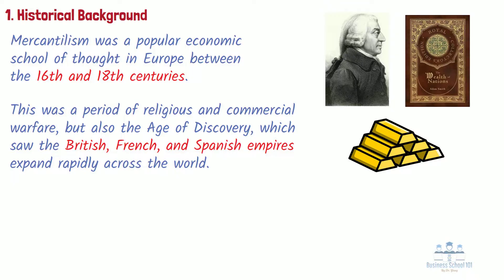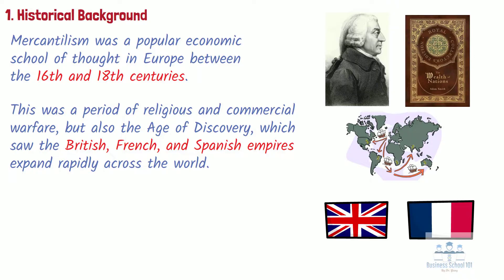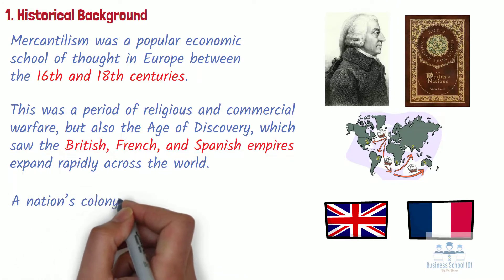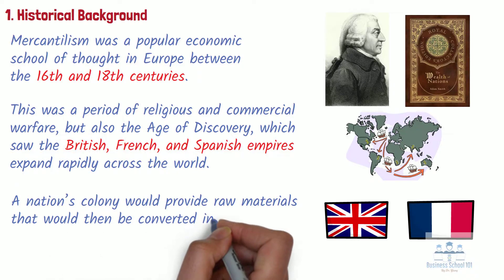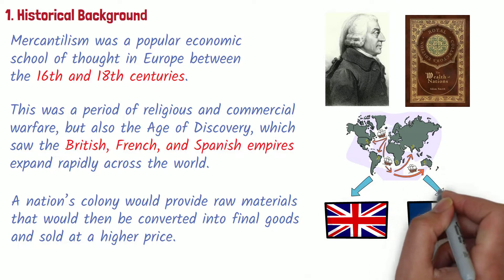As colonies grew, it meant there was a more interconnected system of trade. For example, Britain had links to Australia, India, Canada, and significant parts of Africa. Similarly, France had colonies in Africa, North America, and parts of Asia. The world was becoming interconnected and each imperialist had an incentive to keep trade going between the colonies and itself. The colonies were important to France, Britain, and Spain, which had fewer raw materials. For instance, Britain relied on its colonies to provide goods such as sugar, tobacco, tropical fruits, and gold. The idea was that a nation's colony would provide raw materials that would then be converted into final goods and sold at a higher price, providing a favorable balance of trade to the mother country and enhancing its gold stock.